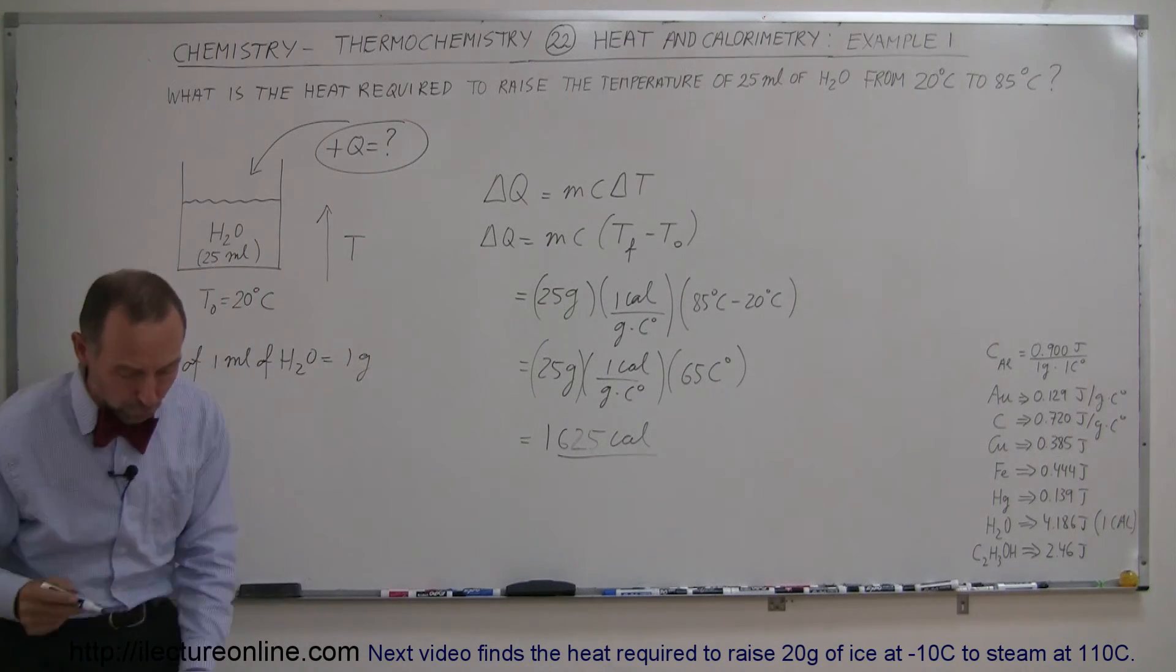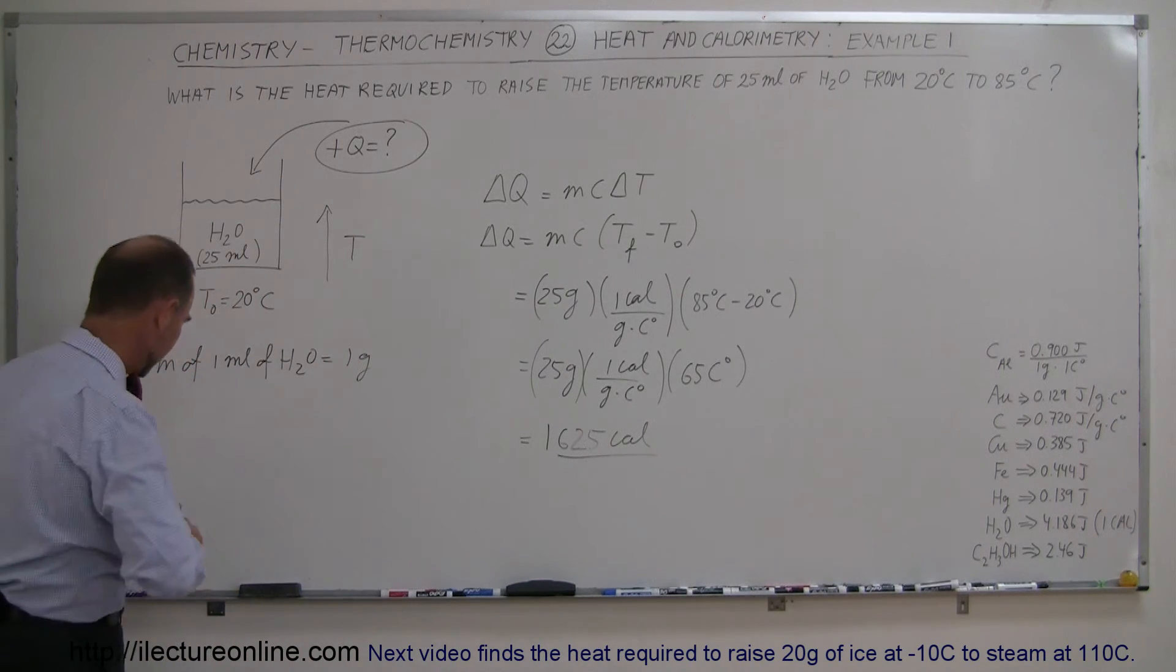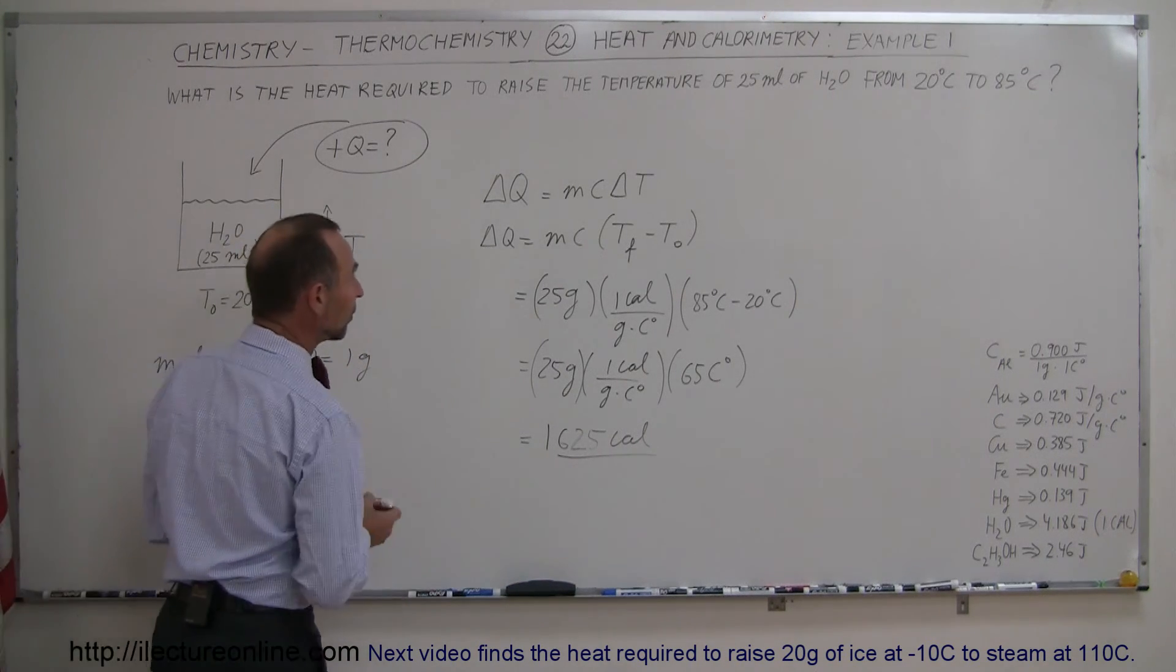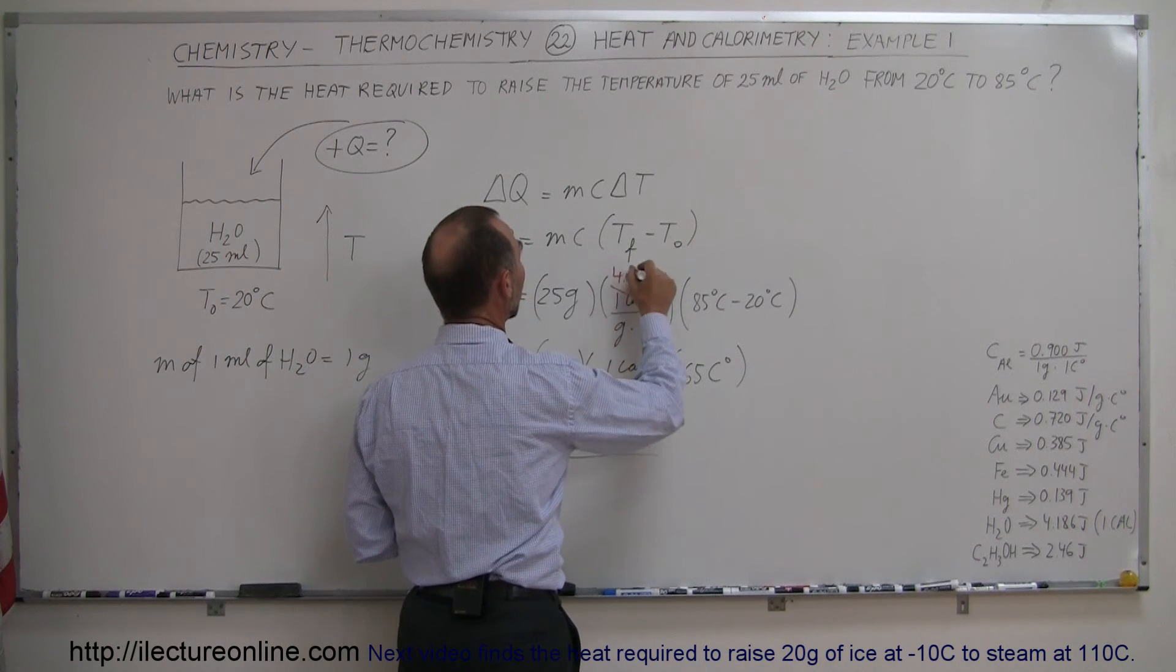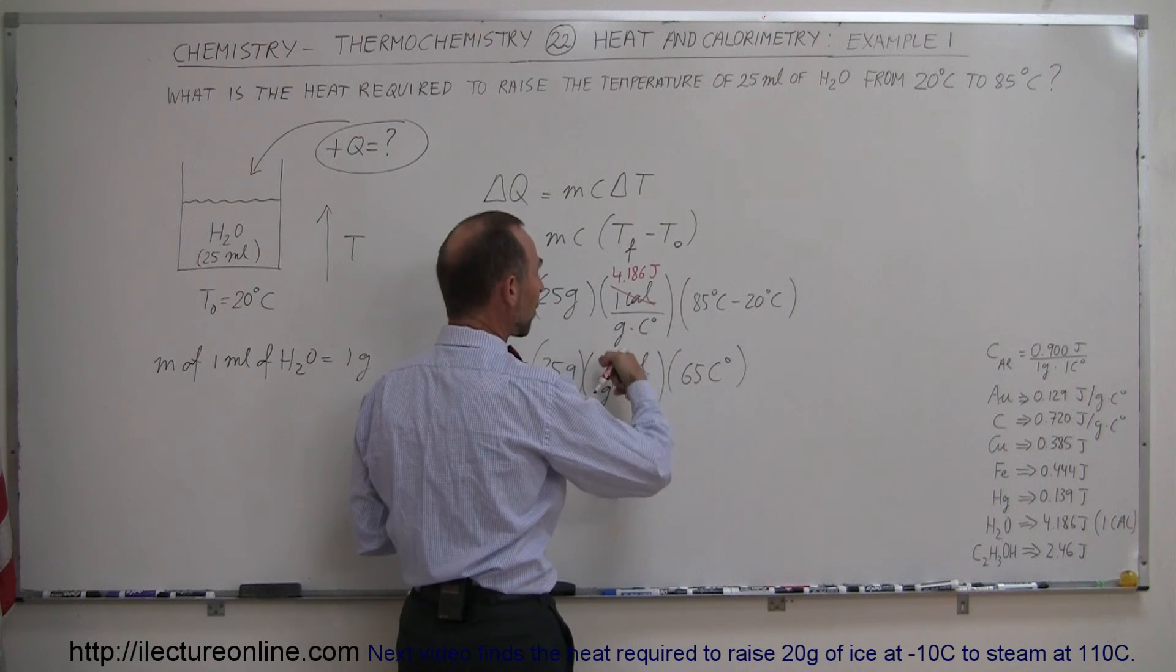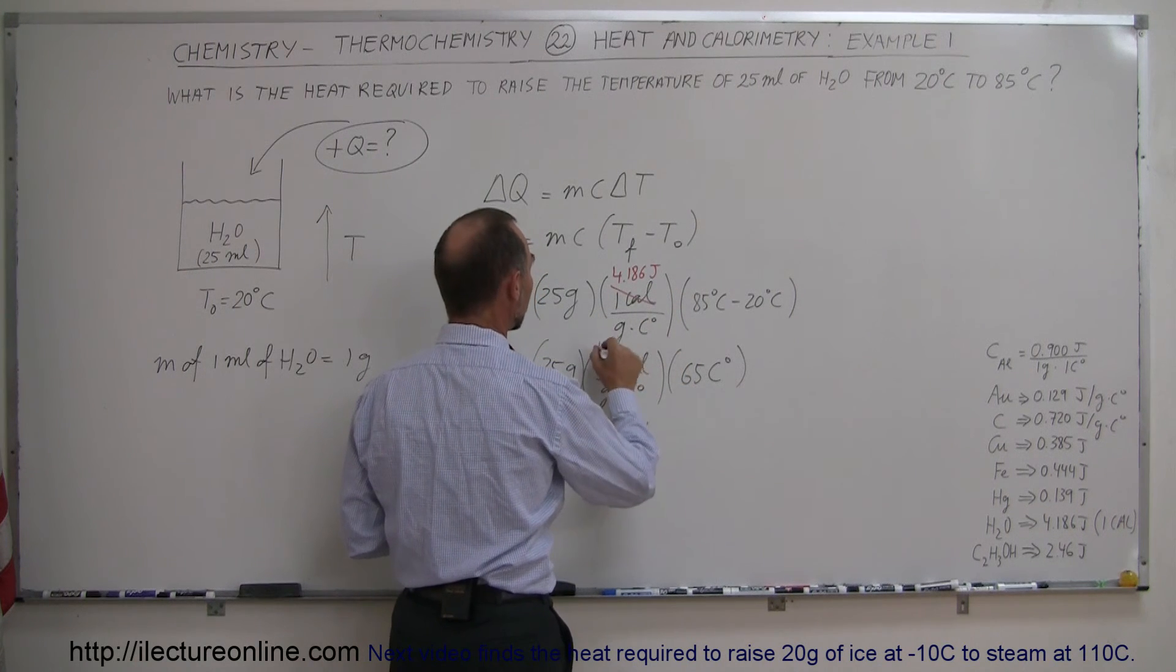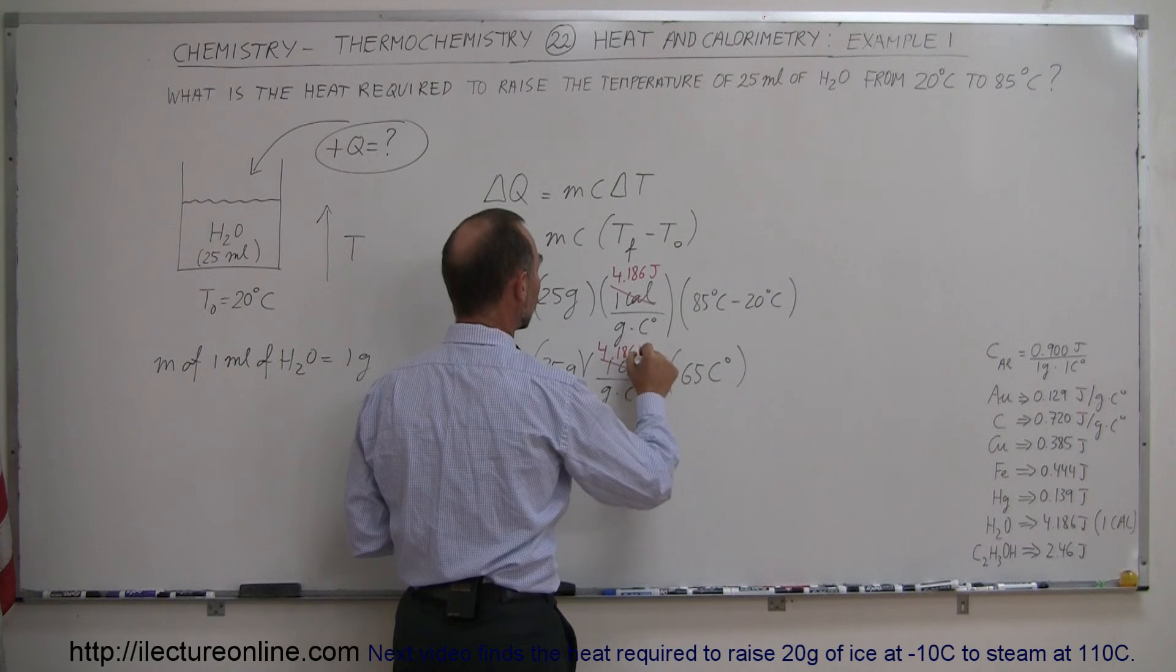Now, what if we had done this in joules instead of calories? Not a problem. The only thing that would have then changed is instead of calories, I would have then replaced it with 4.186 joules instead of how many calories per gram per centigrade degree. So this would have been 4.186 joules.